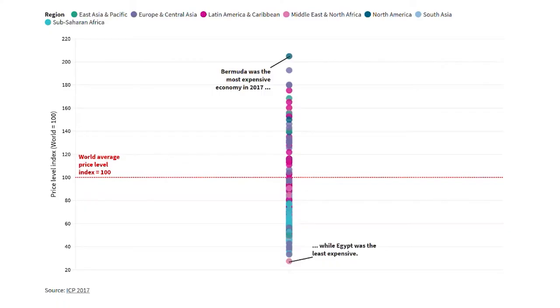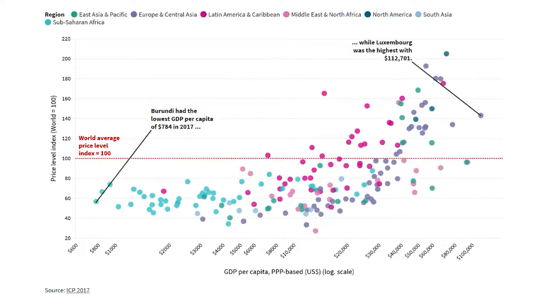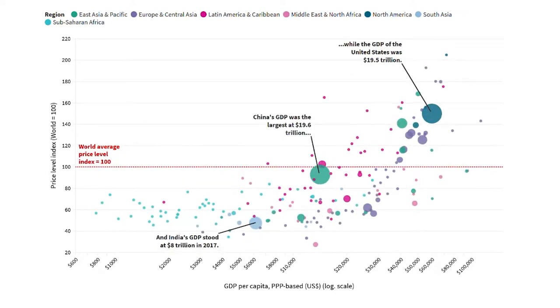Let's look at a visualization showing these results at the level of GDP. First, the ICP's price level indexes, calculated as the ratio of an economy's PPP to the market exchange rate, show how expensive or cheap an economy is compared to the world average, set at 100. In 2017, Bermuda was the most expensive at the level of GDP, standing at 204, while Egypt was the cheapest at 27. We can add in the PPP-based GDP per capita for each economy to see the relationship between prices and income. Burundi had the lowest GDP per capita at just under $800, while Luxembourg had the highest of over $112,000 in 2017.